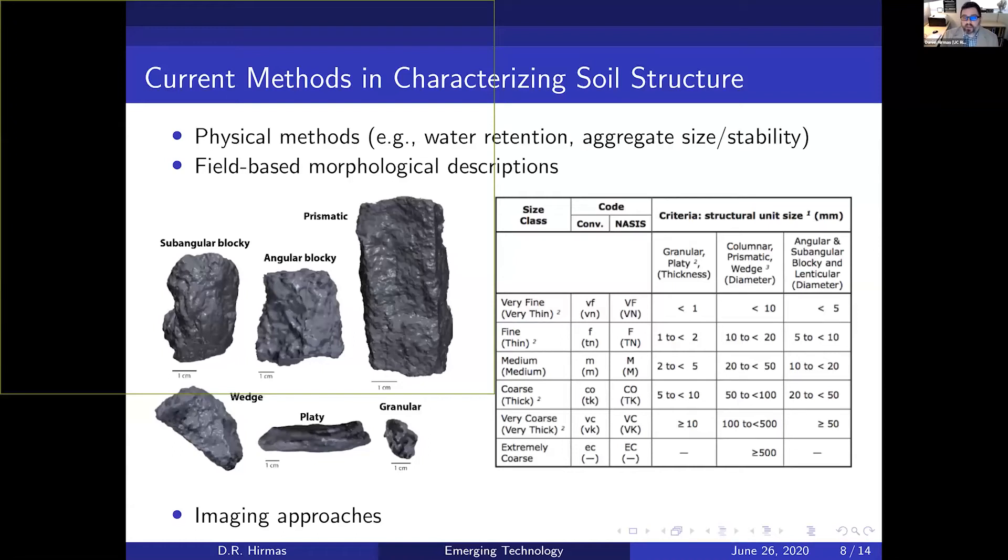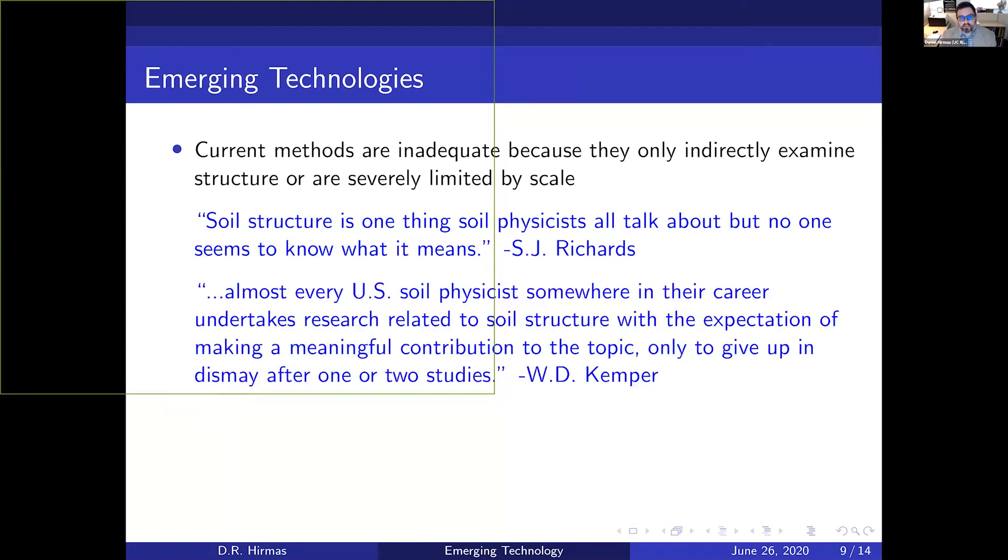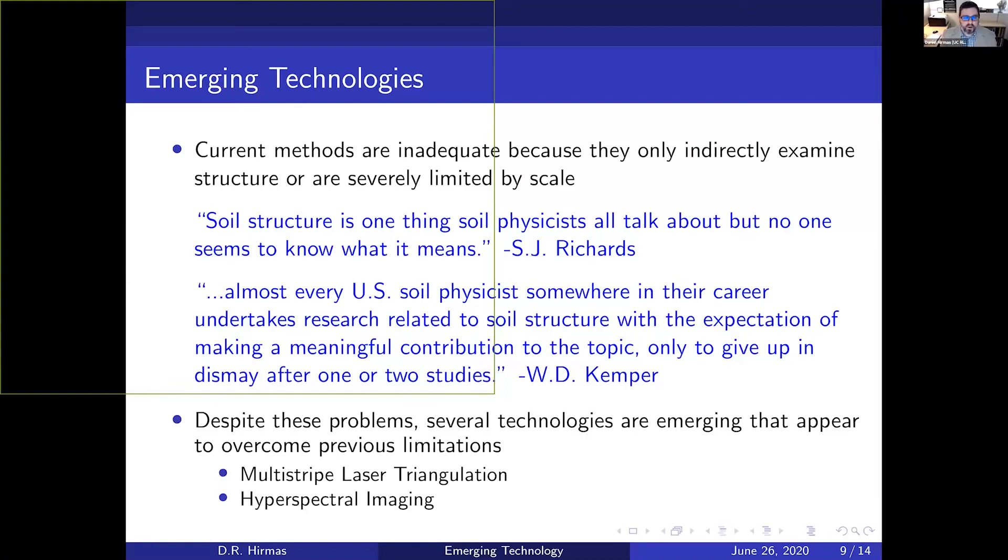Recently there have been imaging approaches promoted, like x-ray computed tomography. But the problem is that the samples required are very small. Current methods are inadequate because they only indirectly examine structure or are very limited by scale. S.J. Richards said that structure is one thing soil physicists all talk about, but no one seems to know what it means. W.D. Kemper noted that almost every US soil physicist somewhere in their career undertakes research related to soil structure expecting to make a meaningful contribution, only to give up in dismay after one or two studies. It's a really tricky thing to understand because of the scaling relationship and because it's so irregular.